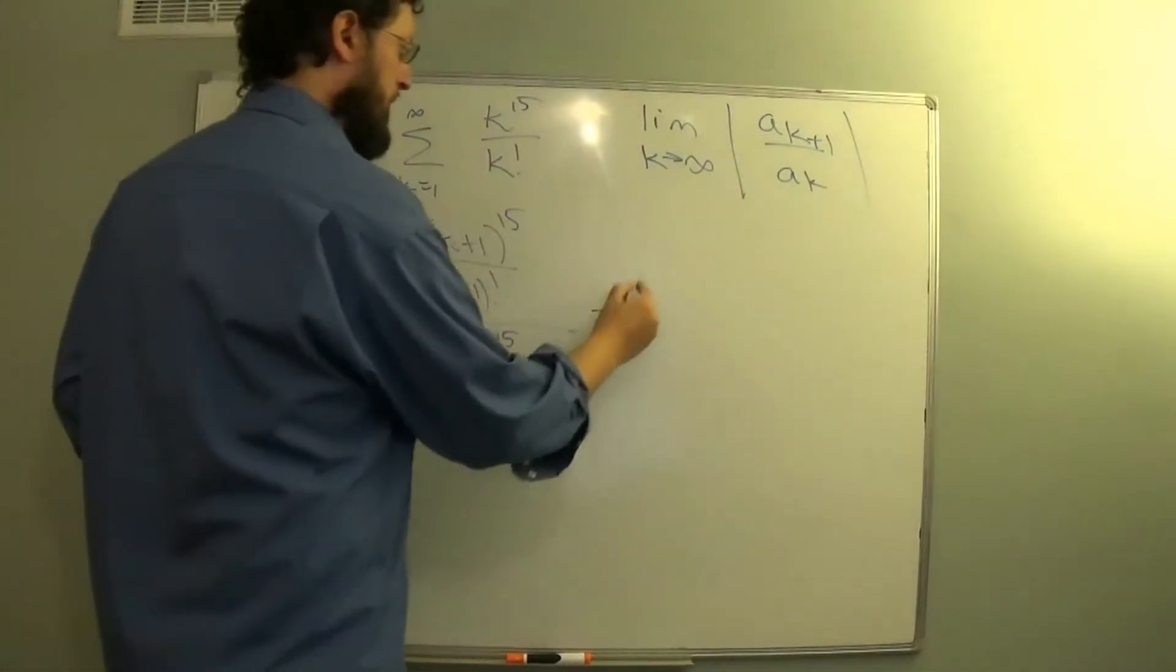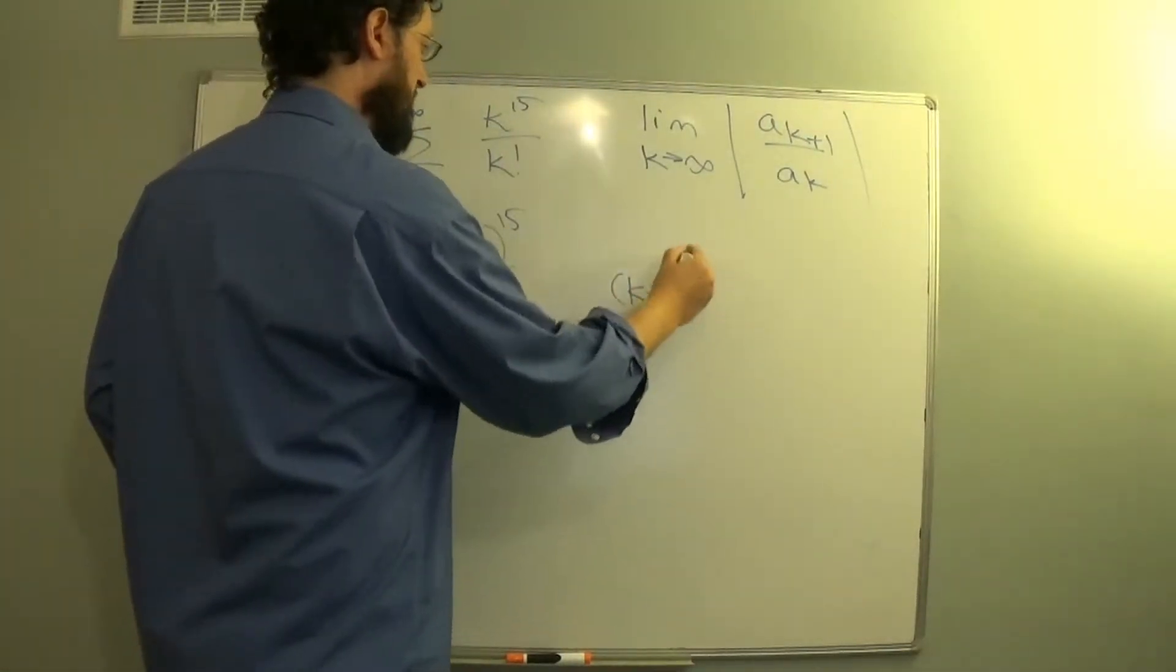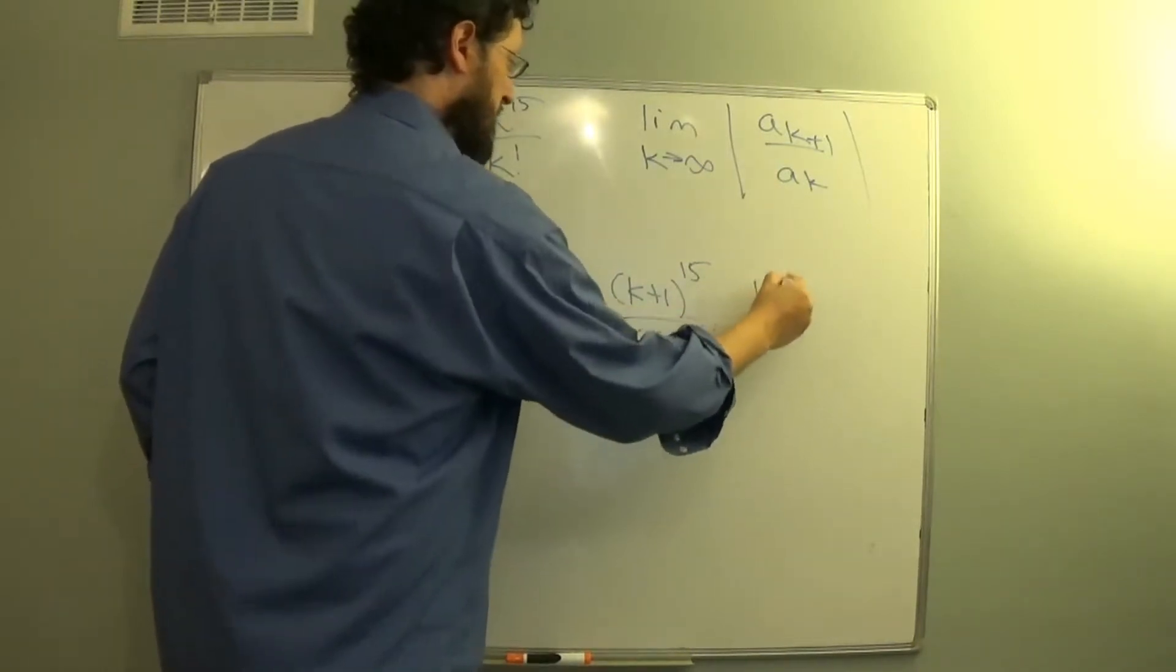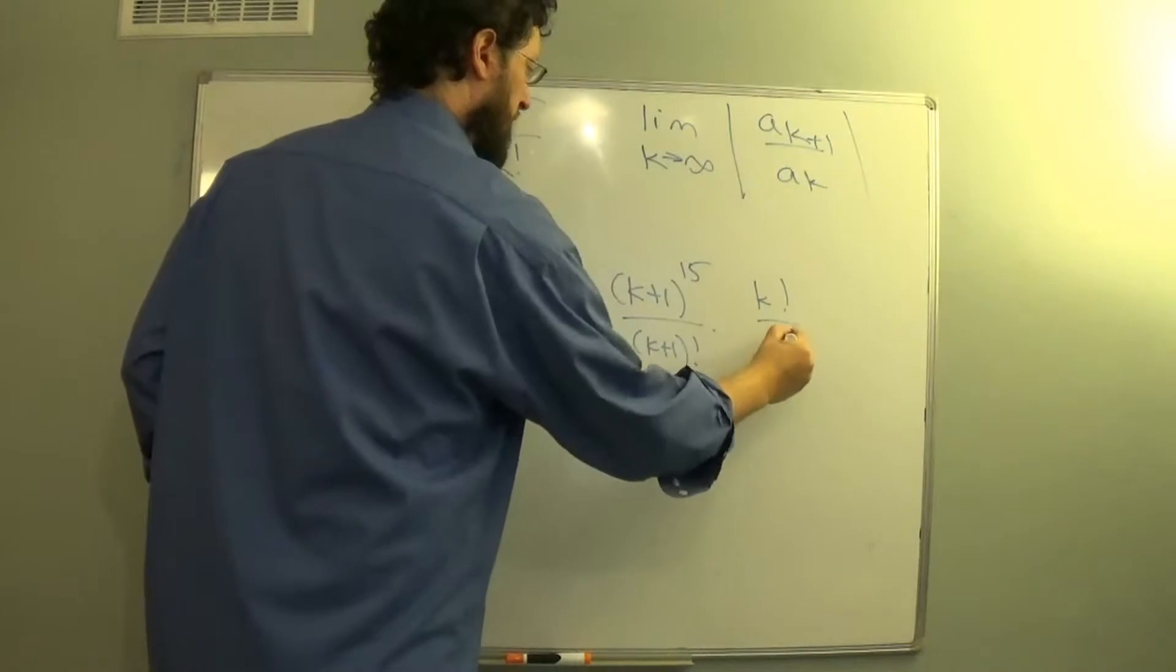Simplify this by changing it into the reciprocal, k plus 1 to the 15 over k plus 1 factorial, times k factorial over k to the 15.